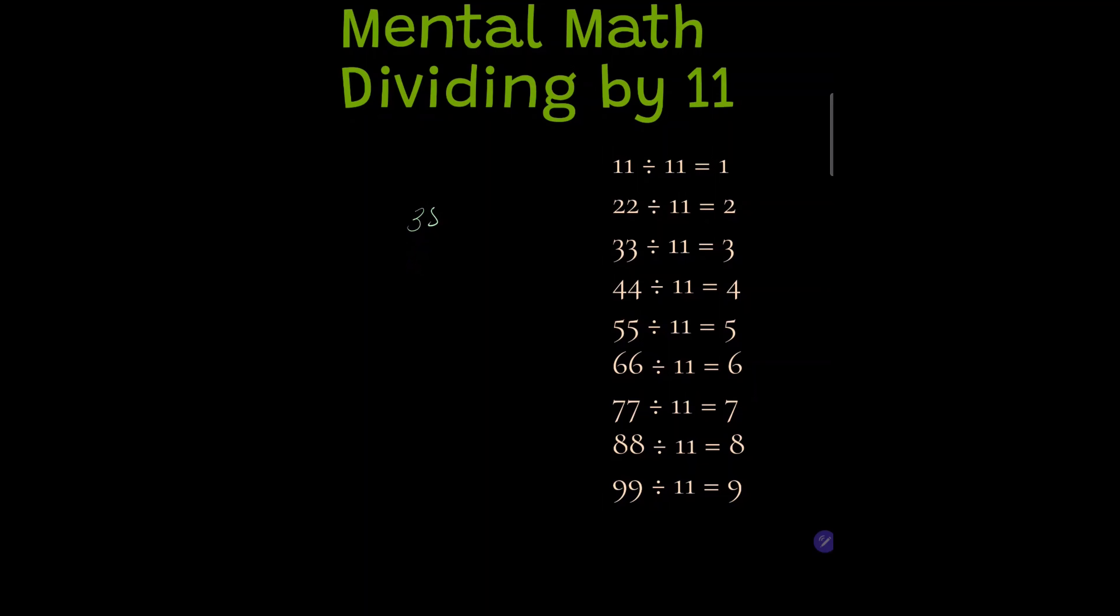Before we answer this question, let's take a look at the 9 times table. Alright, so all the multiples of 9. Here's the 9 times table: 1 times 9 is 9, 2 times 9 is 18, 3 times 9 is 27, and so on.